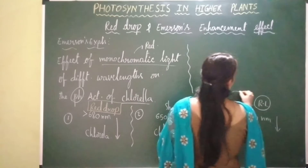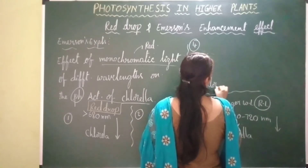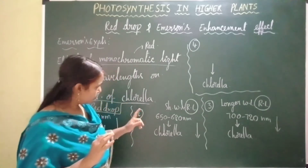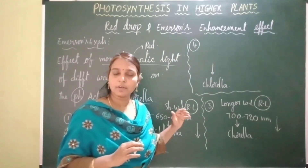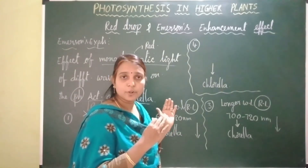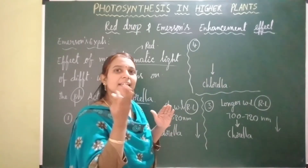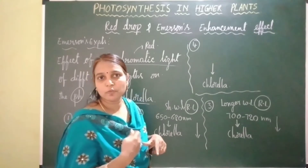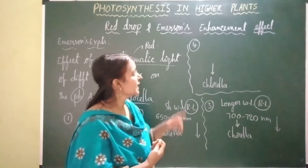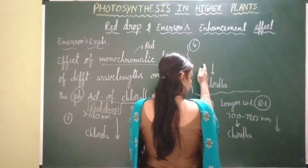In his fourth and last experiment, he exposed Chlorella to red light of both shorter wavelength and longer wavelength simultaneously. When he did so, he observed that there is an increase in the rate of photosynthesis to about 25 percent, and he called this phenomenon as enhancement effect, also called Emerson's enhancement effect.